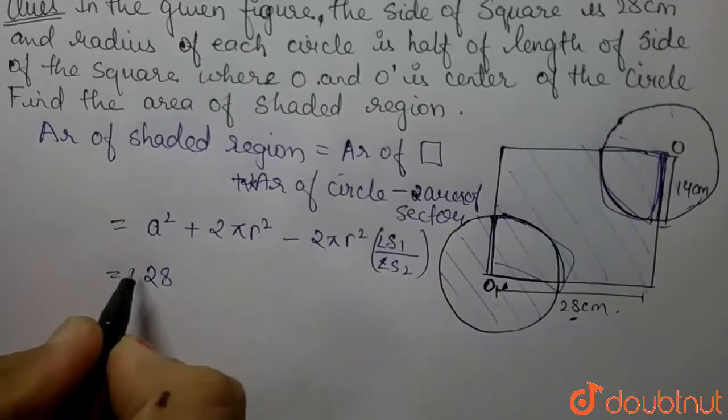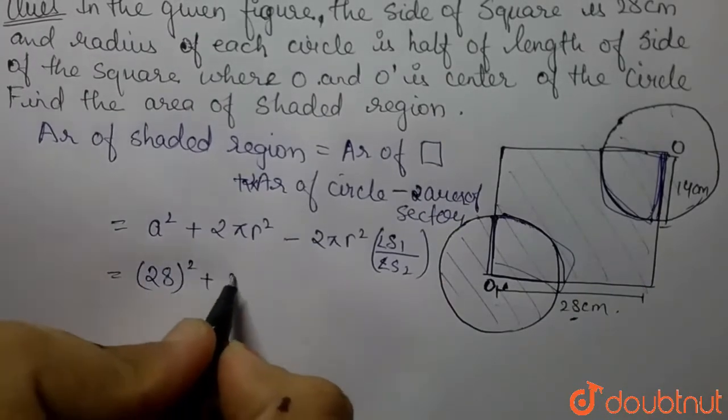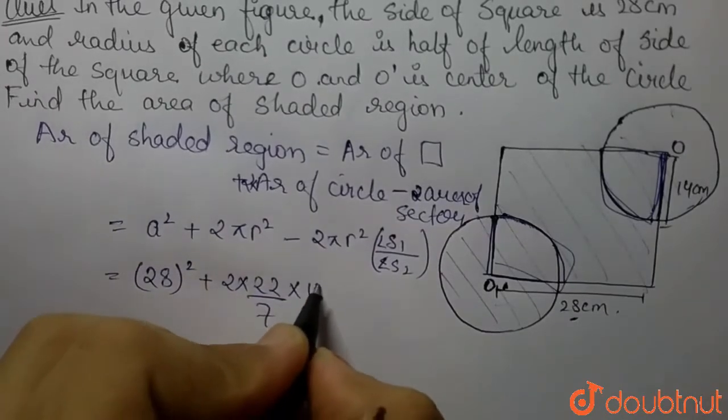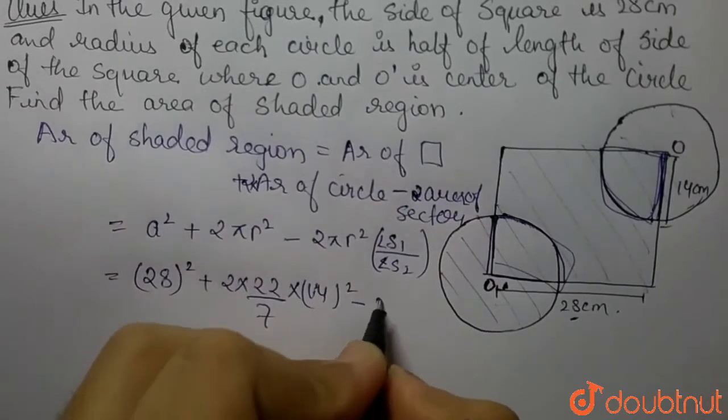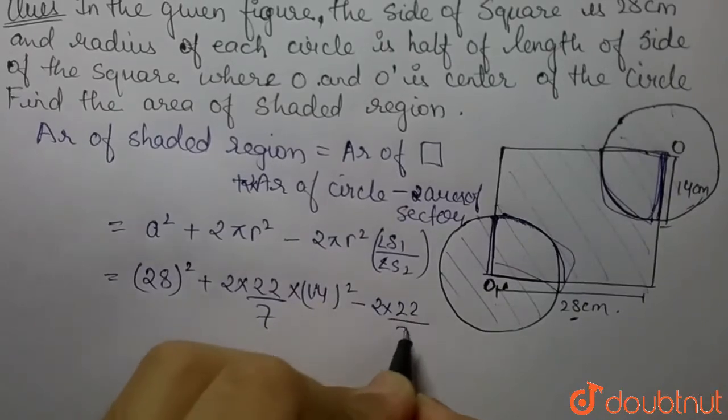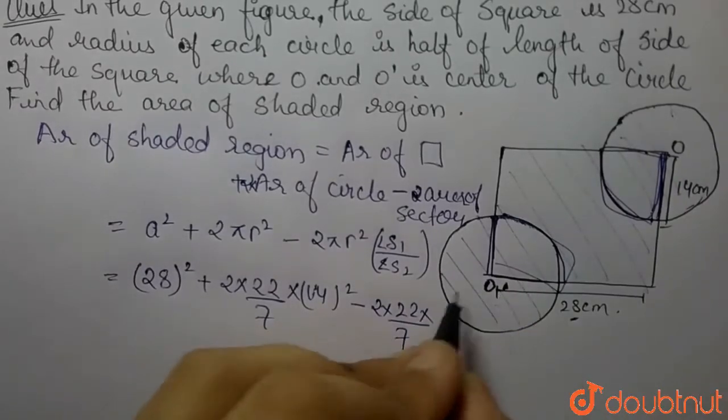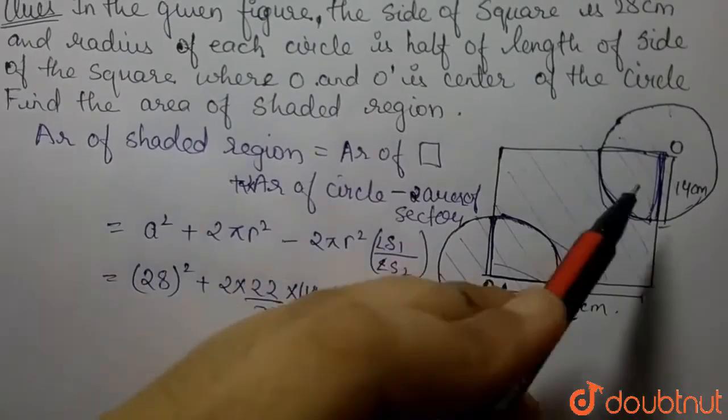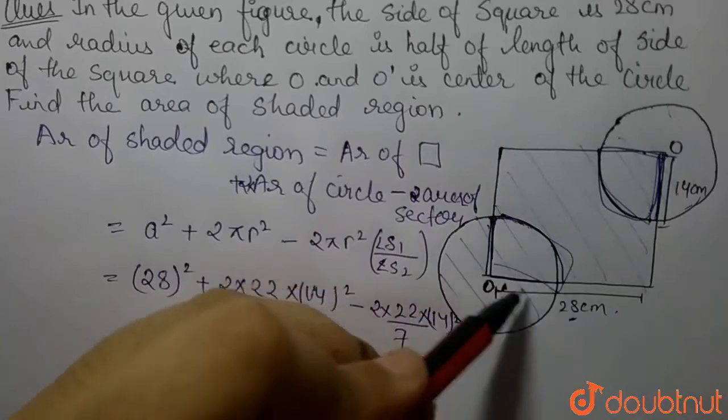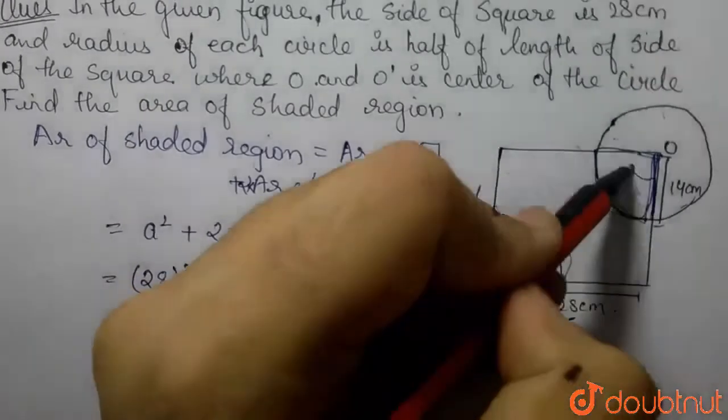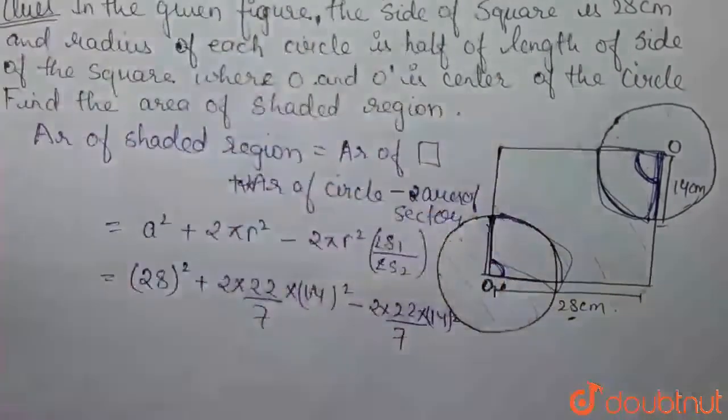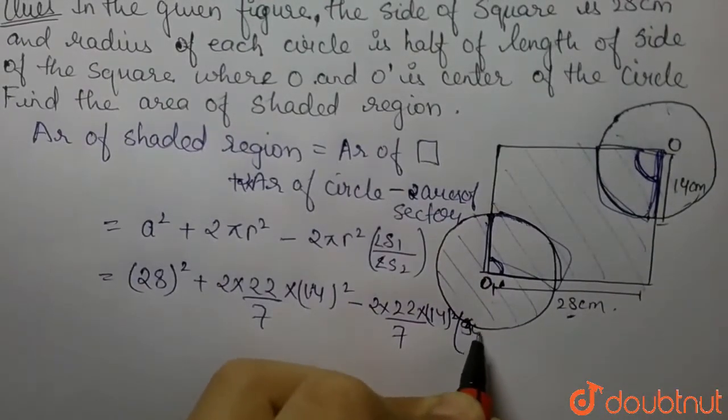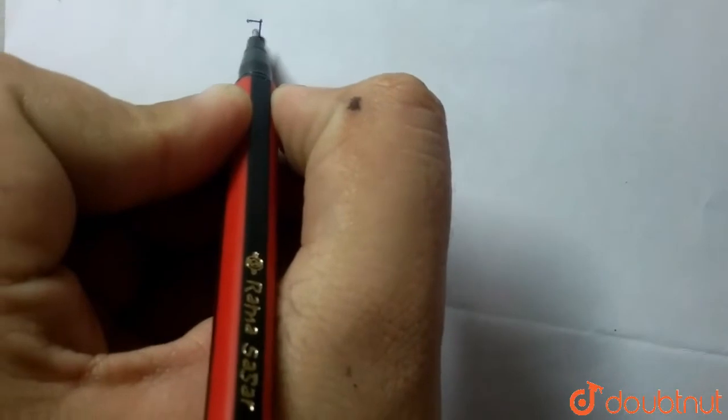We can put the values: 28 squared plus 2 times 22 upon 7 times 14 squared minus 2 times 22 upon 7. The radius is the same for both circles, which is 14. One sector is at 90 degrees and another sector is at 90 degrees.